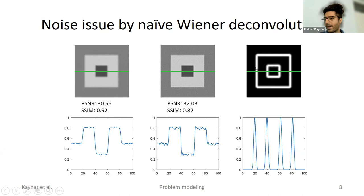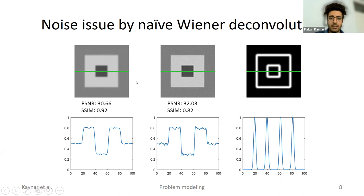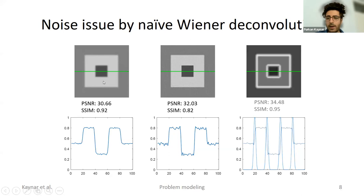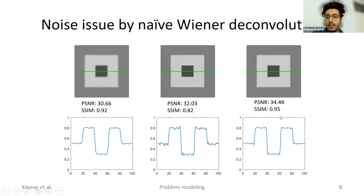We created a soft mask around the edges. We take the deconvolved regions on the edges and in other parts take the flat regions from the degraded image, then combine them together. What we observe is that there are very few artifacts now — only on the edge regions — and in flat regions we see no artifacts because we don't touch those regions. Both PSNR and SSIM metrics improved after this masking. We use this idea in our solution.